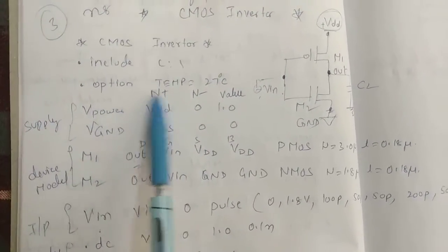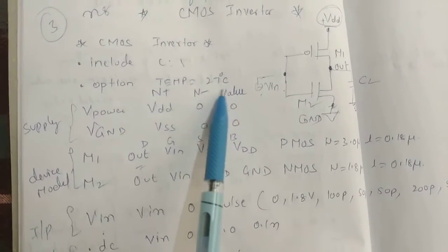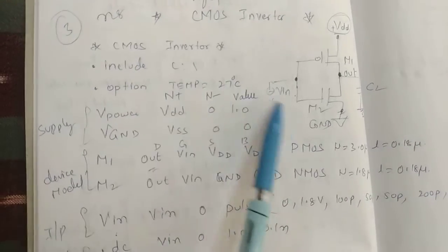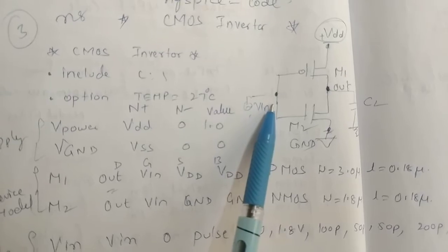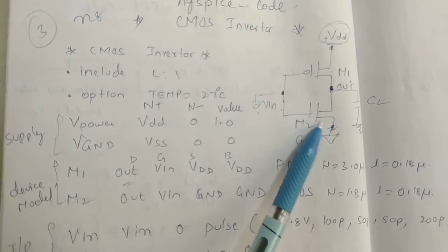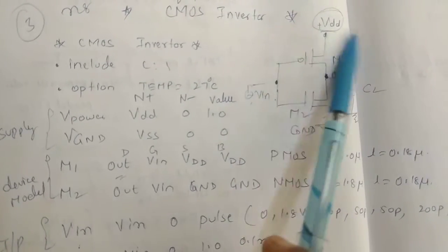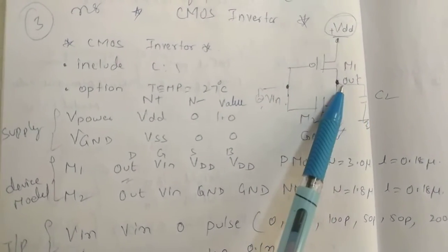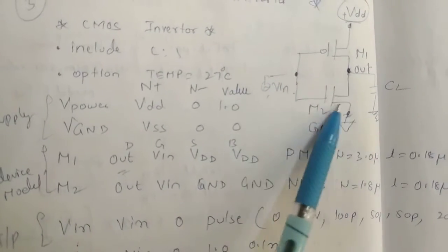Optional: if you want to declare any temperature, you have to declare it as temp equal to 27 degrees. Next, we know that this is the normal CMOS inverter where this is your PMOS, this is NMOS M1 M2. This is grounded, this is connected to VDD, and this is your output with a connected load of CL.